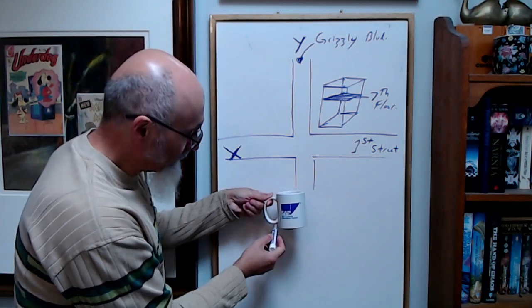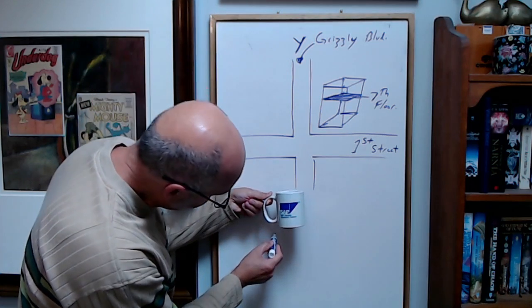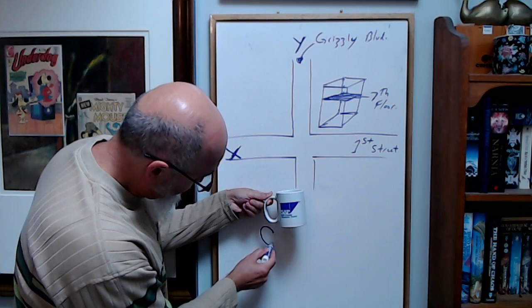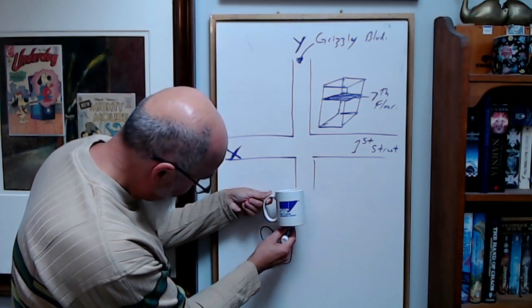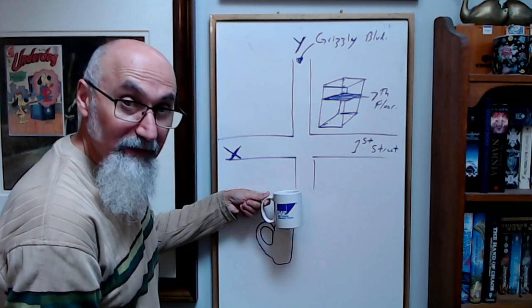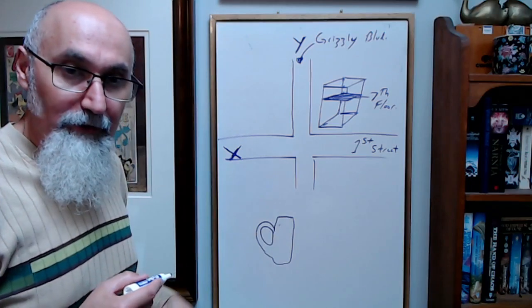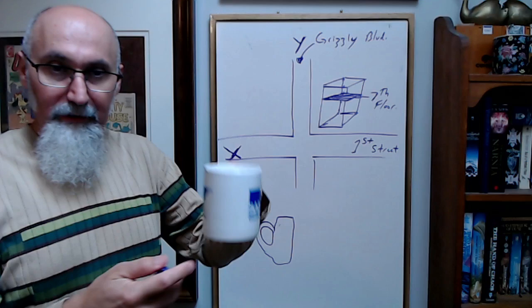This is what the shadow of the cup looks like. Let me see if I can draw it here. Doing it on the drawing is so difficult. Here is the shadow of a cup.